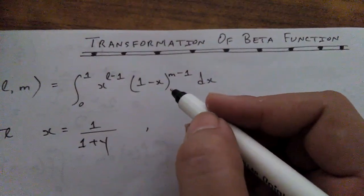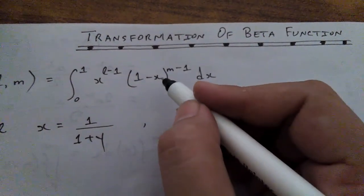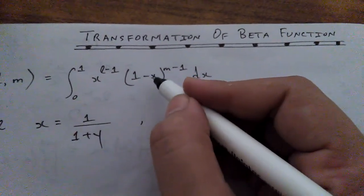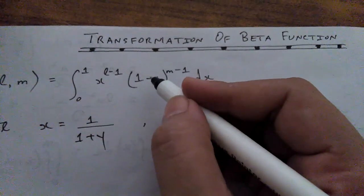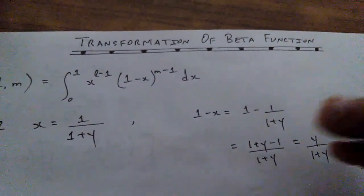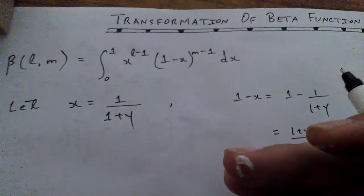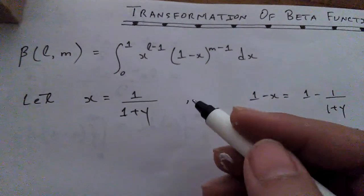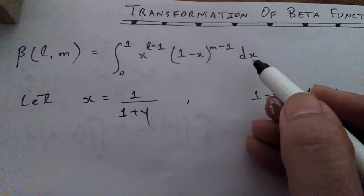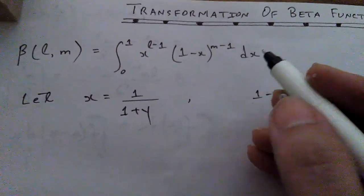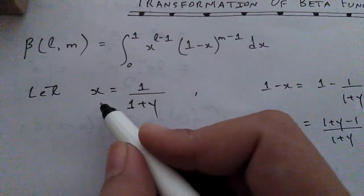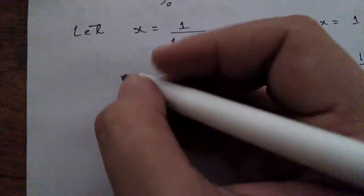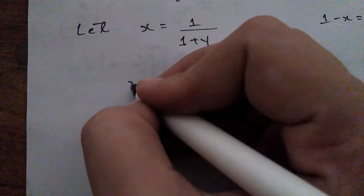While managing the integrand you can substitute the value of x, which is 1/(1+y), and take out the LCM to get y/(1+y). It is your choice how you handle it. Now I also need a value for dx, so I am going to differentiate both sides with respect to x.